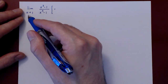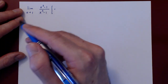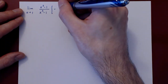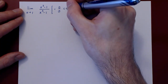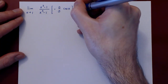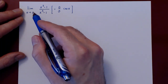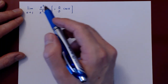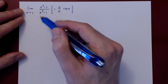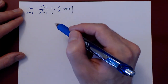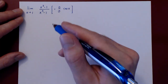As x approaches 1, it is clear that both the numerator and denominator are approaching 0. So we have a 0 over 0 case — an interesting problem. As x gets closer and closer to 1, both the numerator and denominator of our fraction are approaching 0, so it's not clear how this ratio will balance out.